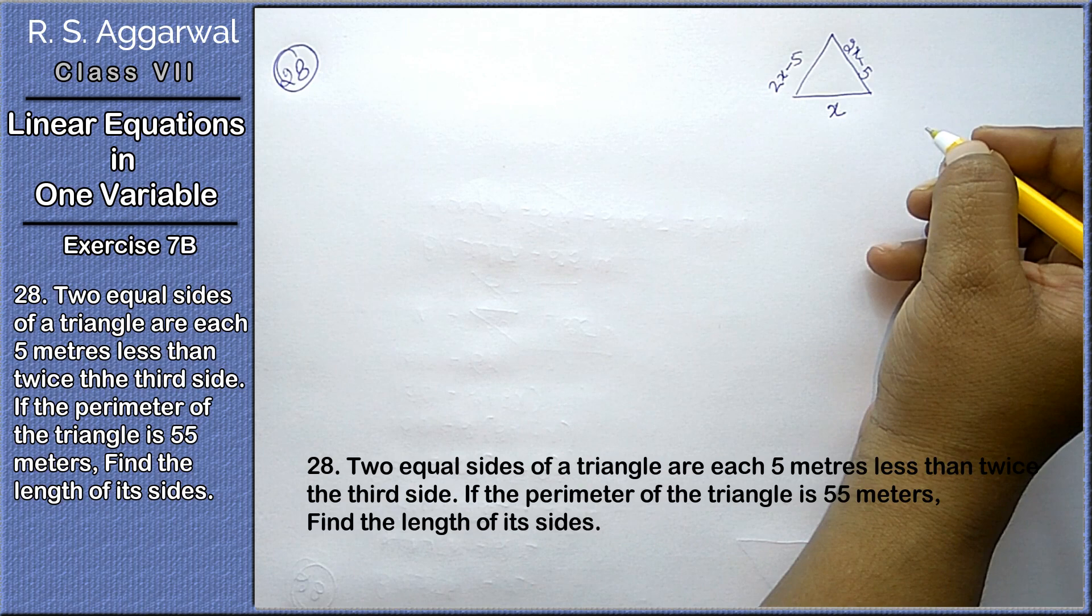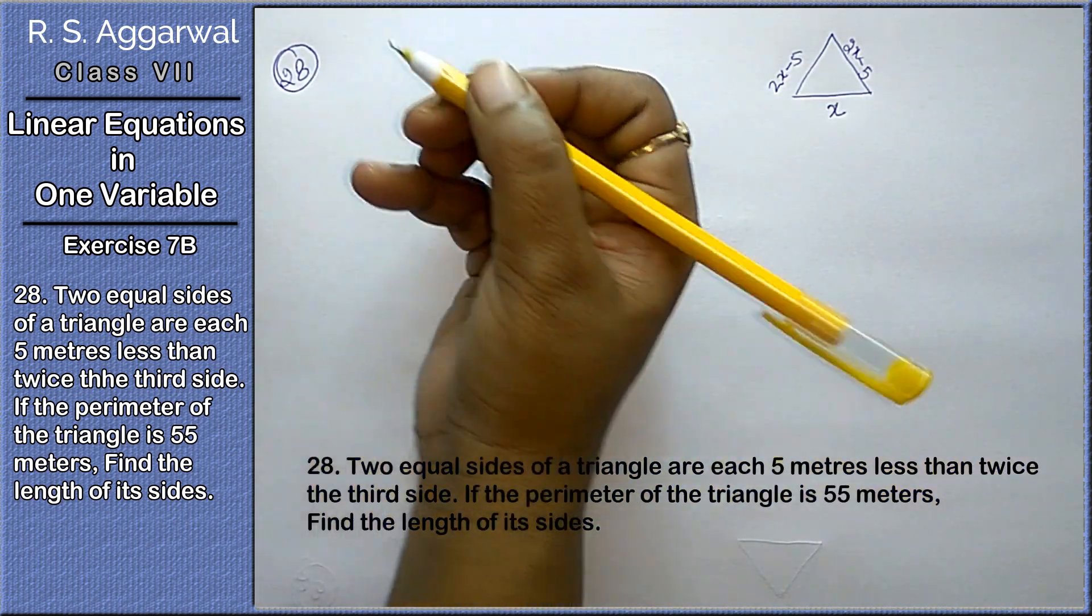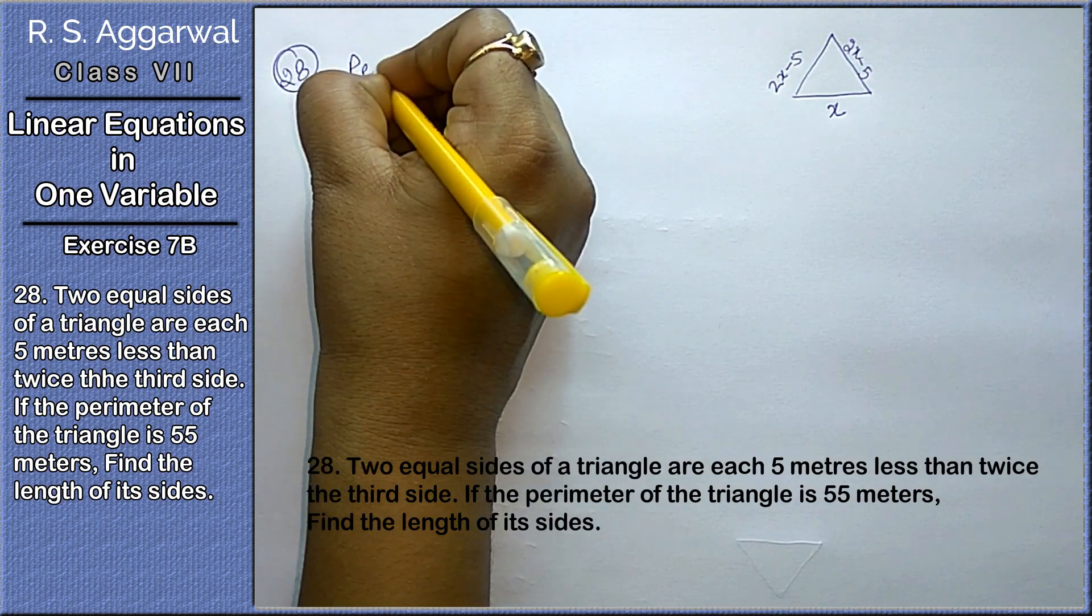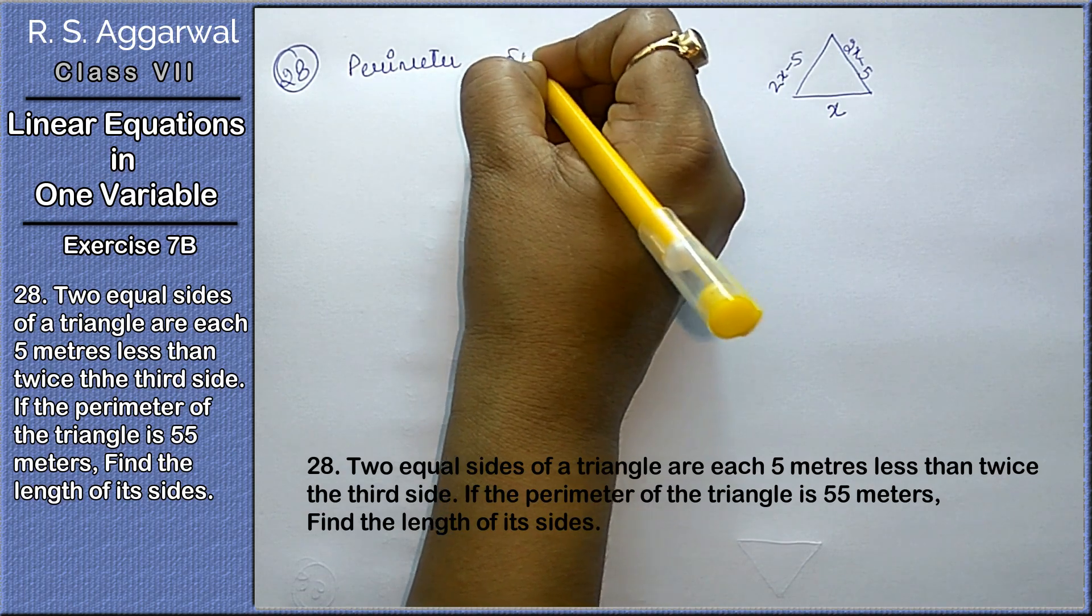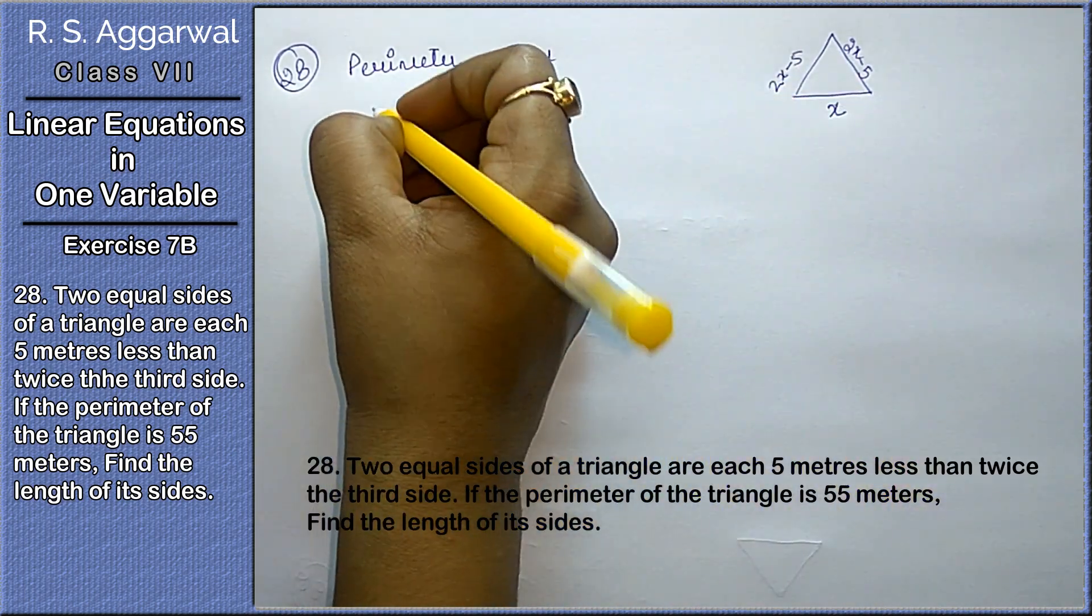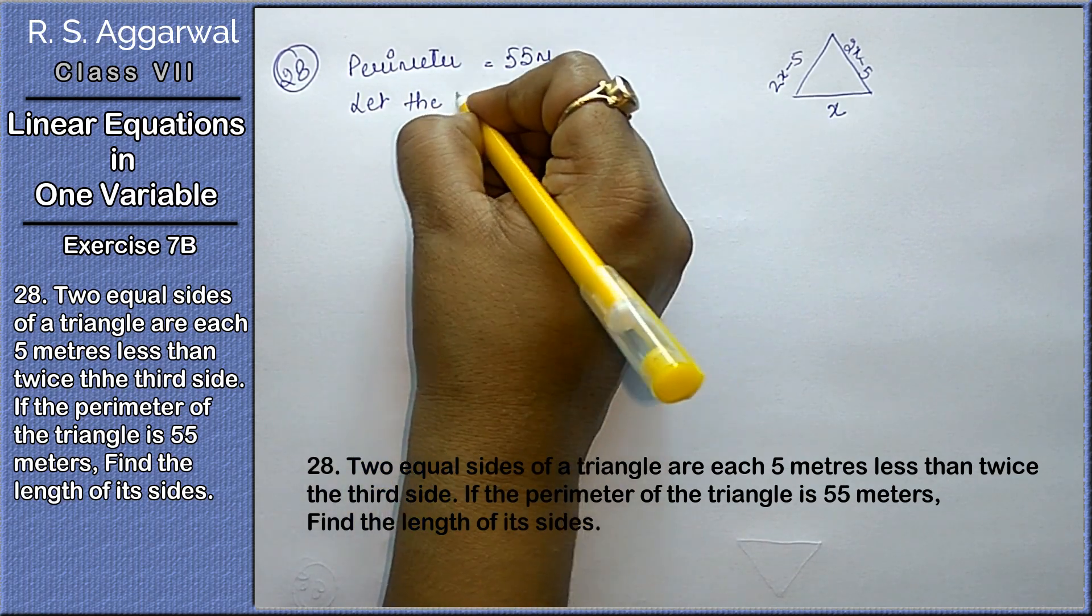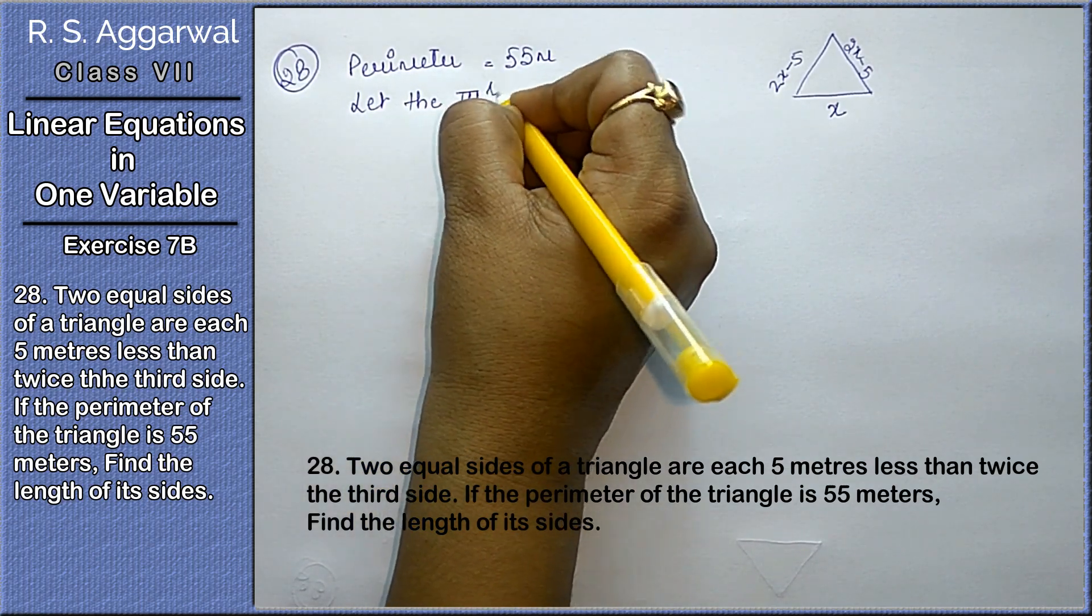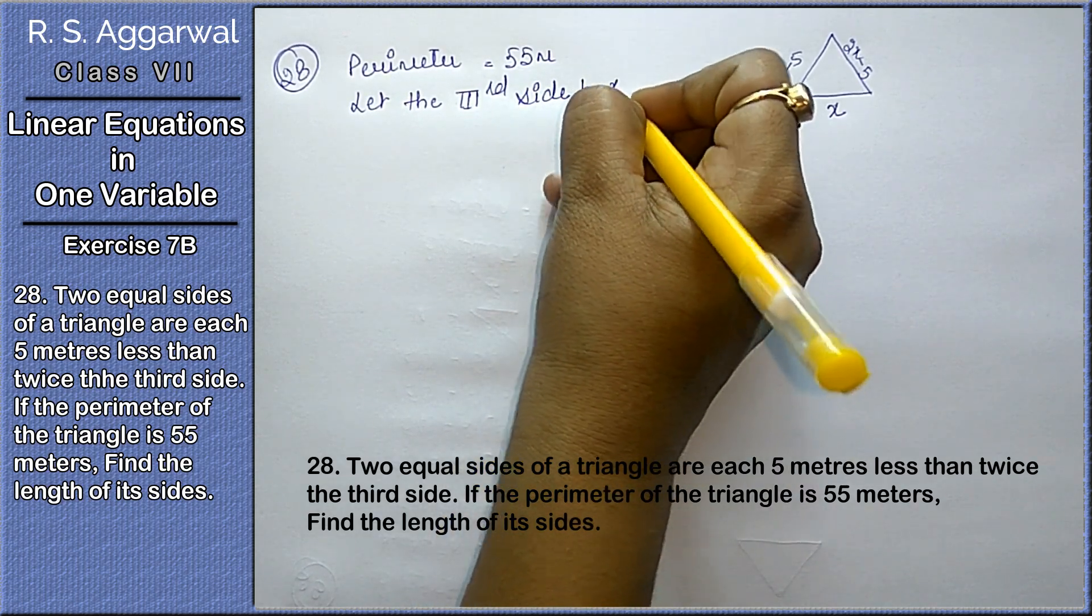If the perimeter of the triangle is 55, find the length of each side. Perimeter is given to us, perimeter is 55 meters. We will let the third side be x.